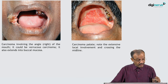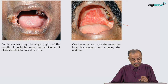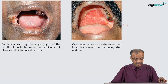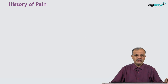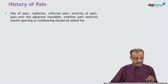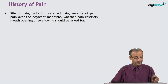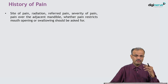Carcinoma at the angle of the lip at the commissure can be seen extending to the buccal mucosa. In carcinoma of the palate, the entire palate may be involved, again crossing the midline bilaterally. Once swelling and ulcer history has been discussed, pain is also very important. Site of pain, radiation, referred pain, severity, and pain over the adjacent mandible or maxilla should be asked. Whether pain restricts mouth opening or is associated with swelling should be assessed, as patients cannot open the mouth due to pain.